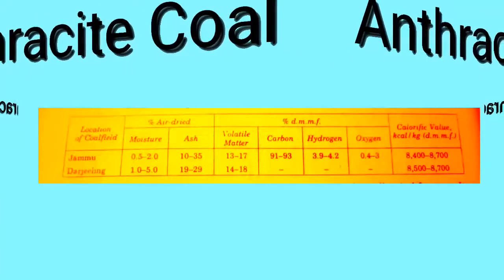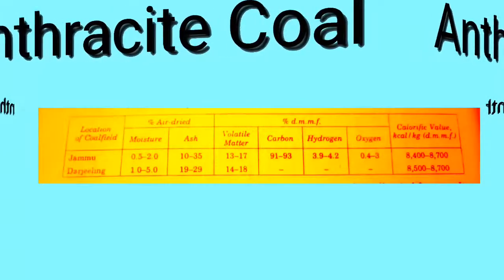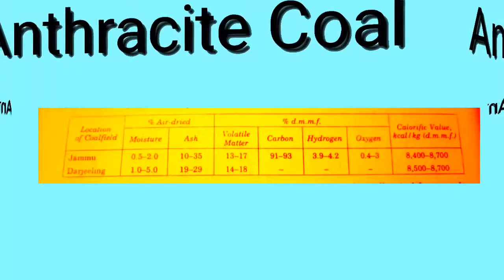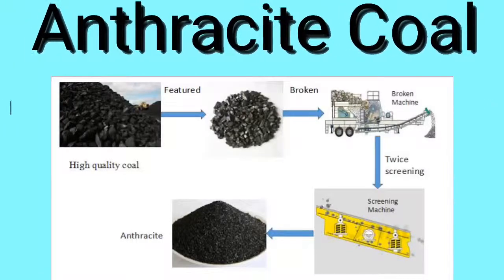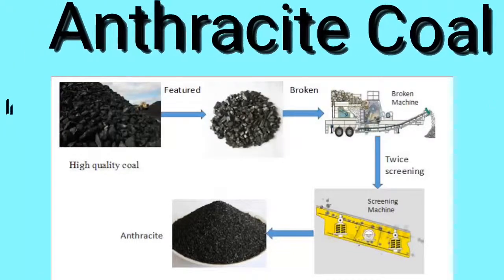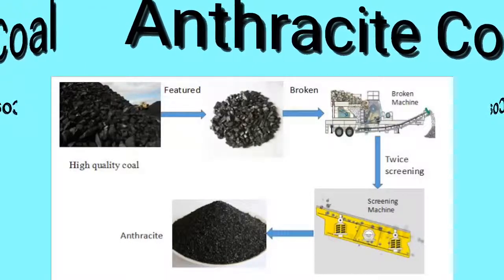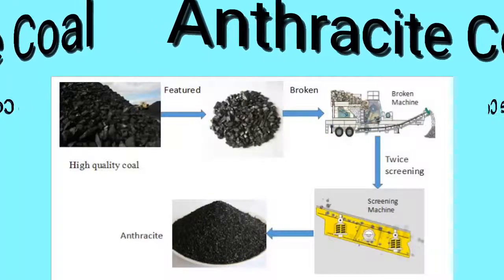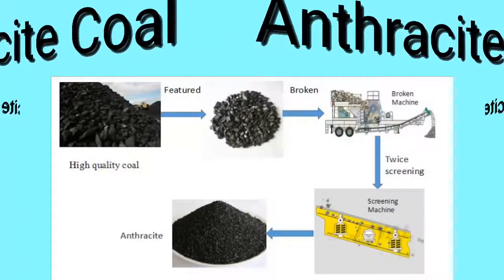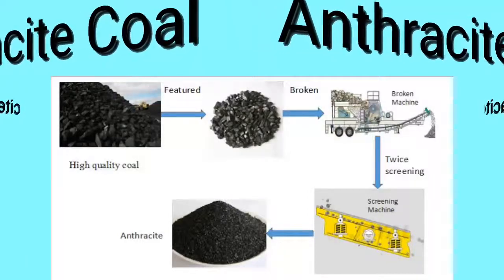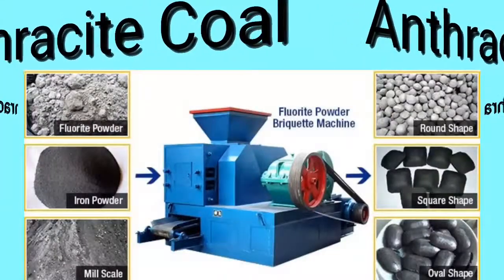Where do we use anthracite? Remember that we use it in boilers, domestic ovens, and in metallic furnaces. It is used in a small quantity as a component of the coke oven charge. Anthracite is also used for carbon electrodes, and we can use it to develop batteries.